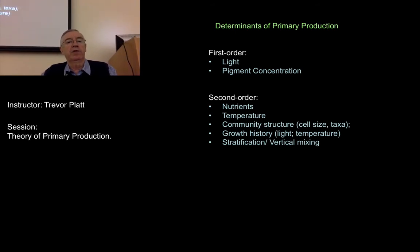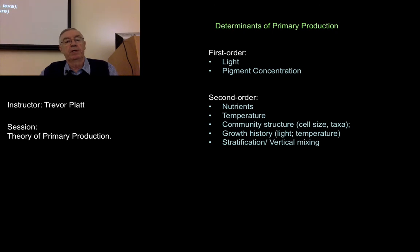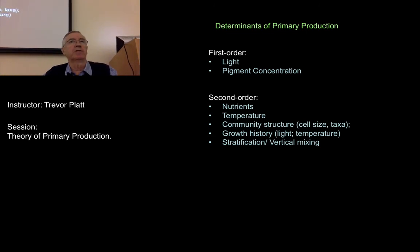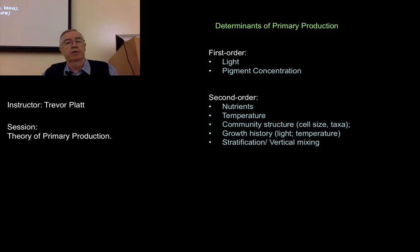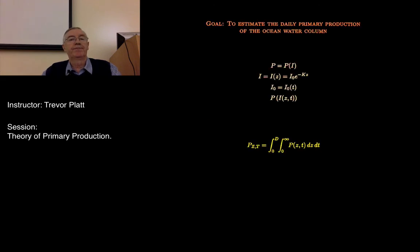Secondarily, we factor in nutrients, temperature, some details about community structure, the growth history — which will determine how the cells may have acclimated to conditions of light or dark — and stratification in the water column. If we're going to make a model of primary production, we use this template: deal with the first-order factors first, then worry about the second-order factors later.